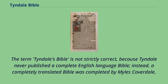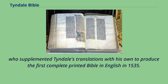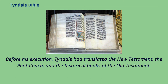The term Tyndale's Bible is not strictly correct, because Tyndale never published a complete English language Bible. Instead, a completely translated Bible was completed by Miles Coverdale, who supplemented Tyndale's translations with his own to produce the first complete printed Bible in English in 1535. Before his execution, Tyndale had translated the New Testament, the Pentateuch, and the historical books of the Old Testament.